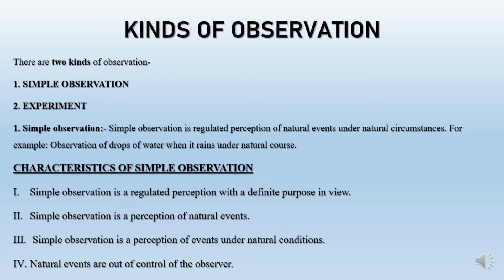If we analyze this definition of simple observation, we find certain characteristics. Number one, simple observation is a regulated perception with a definite purpose in view. As simple observation is a kind of observation, we must have a definite purpose in view. Secondly, simple observation is a perception of natural events — we observe the natural events.